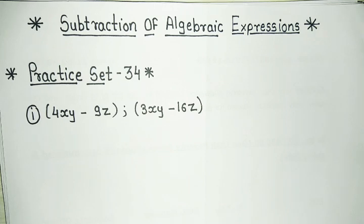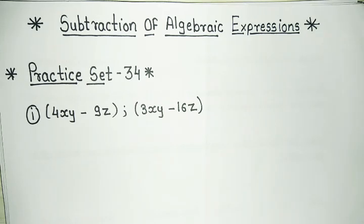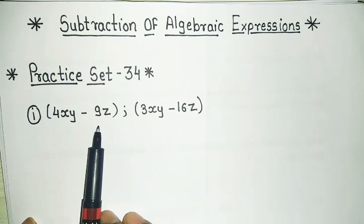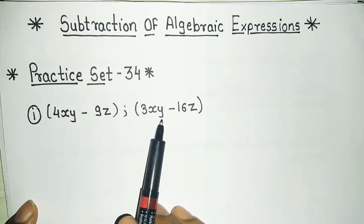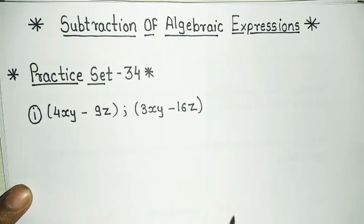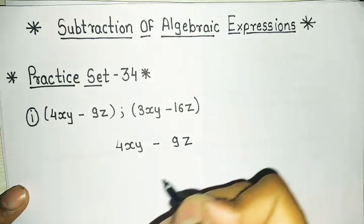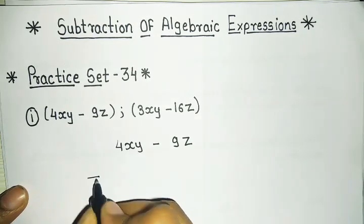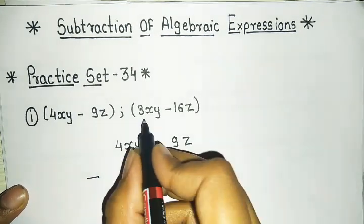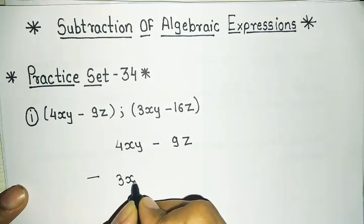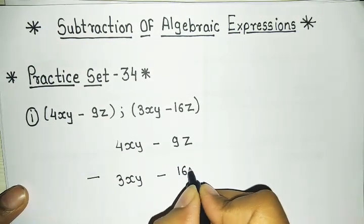In practice set 34, we will subtract the second expression from the first one. Question number 1: the first expression is 4xy minus 9z and the second expression is 3xy minus 16z. We write 4xy minus 9z, and below it with a subtraction sign, we write 3xy minus 16z.